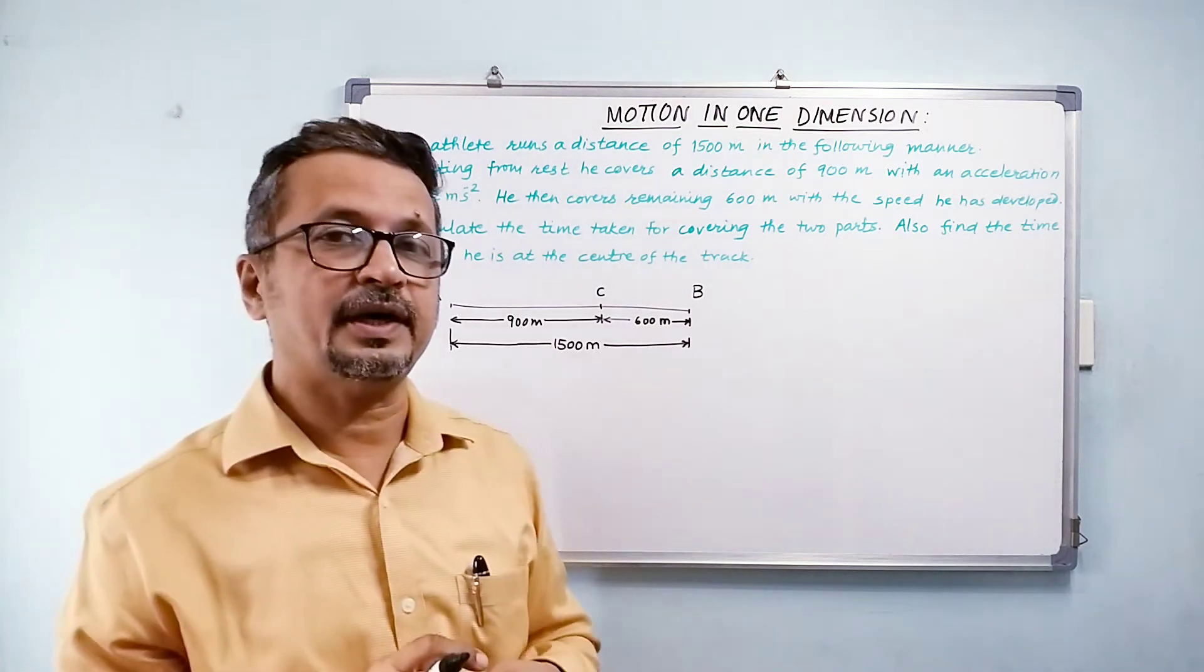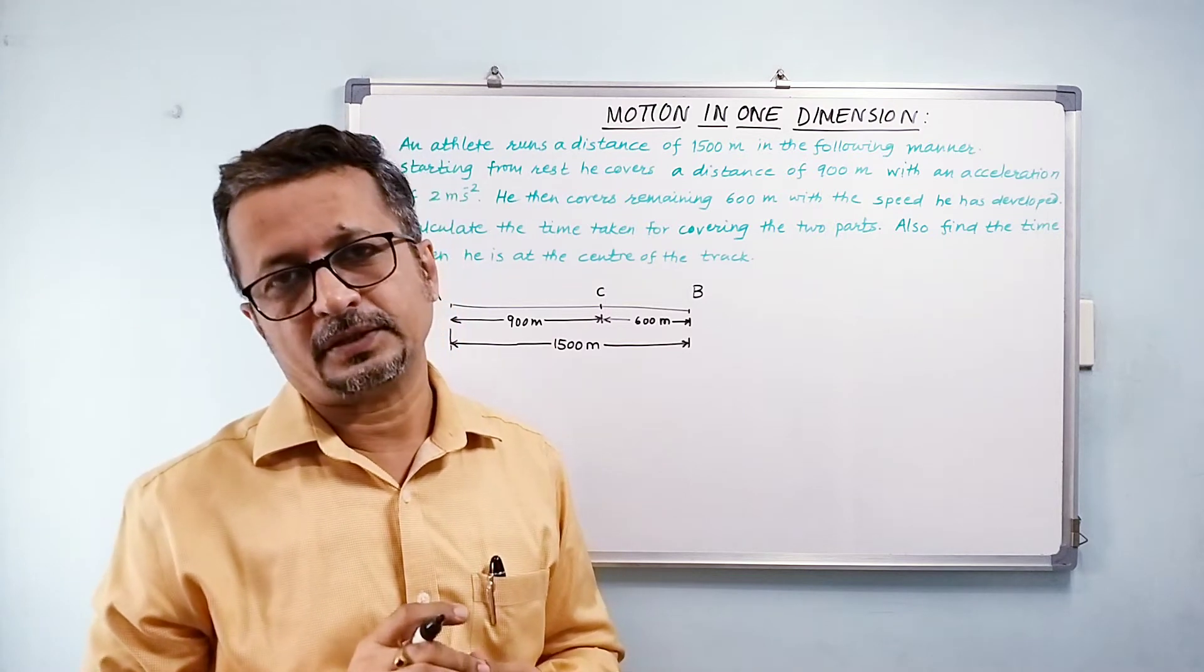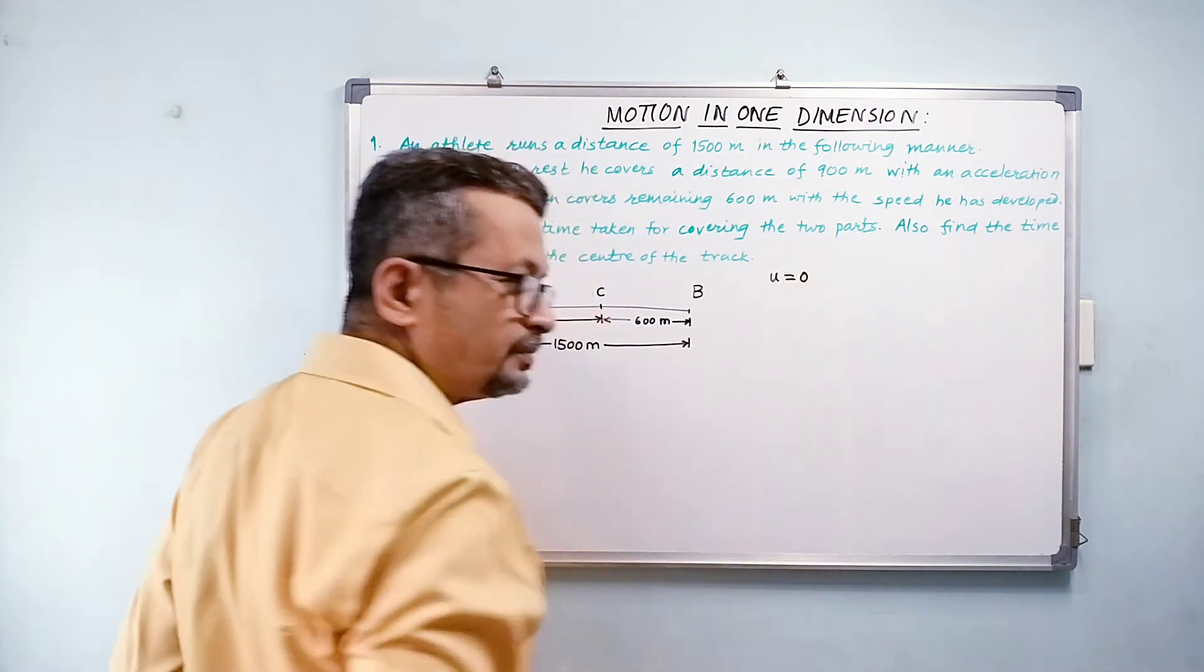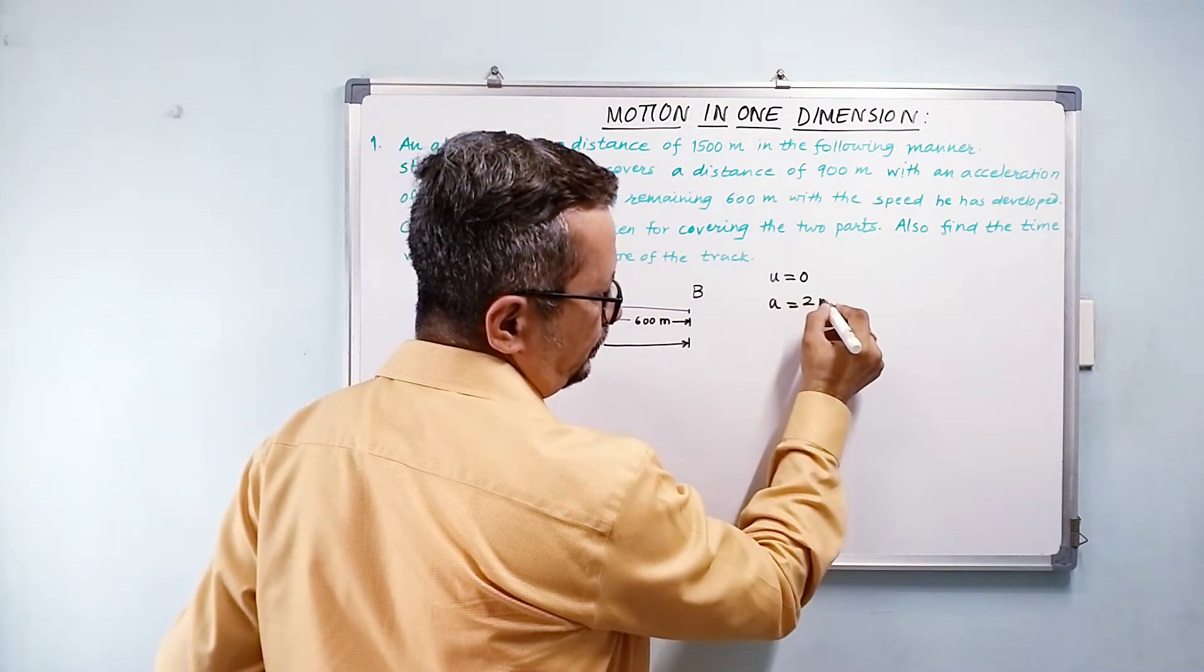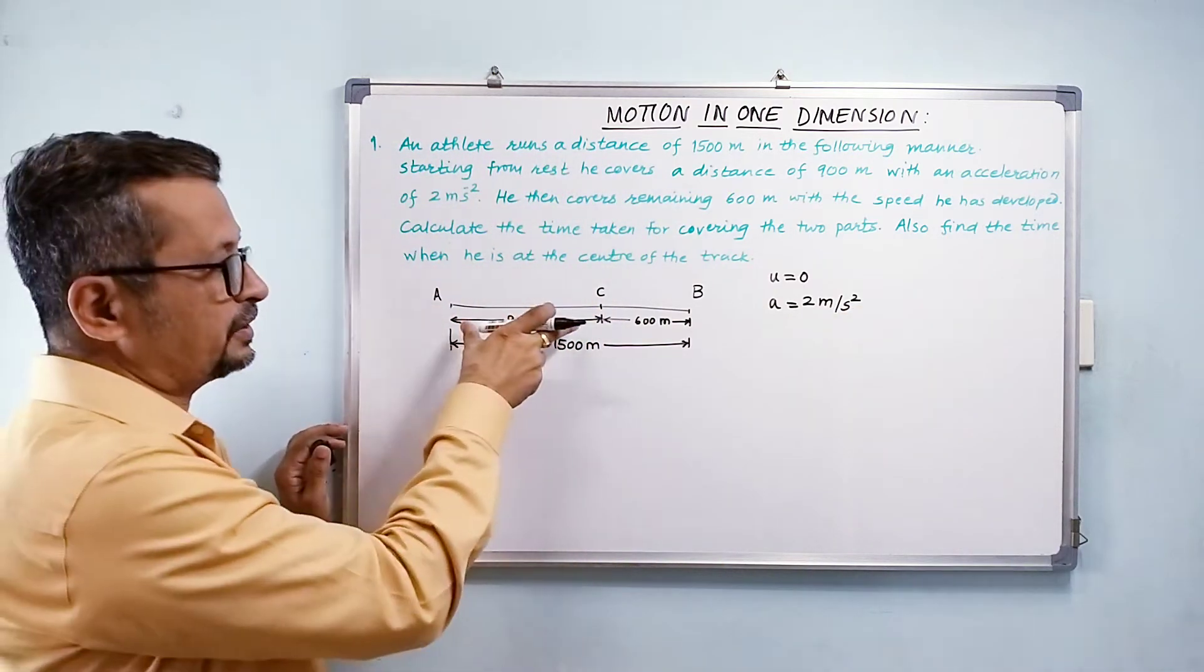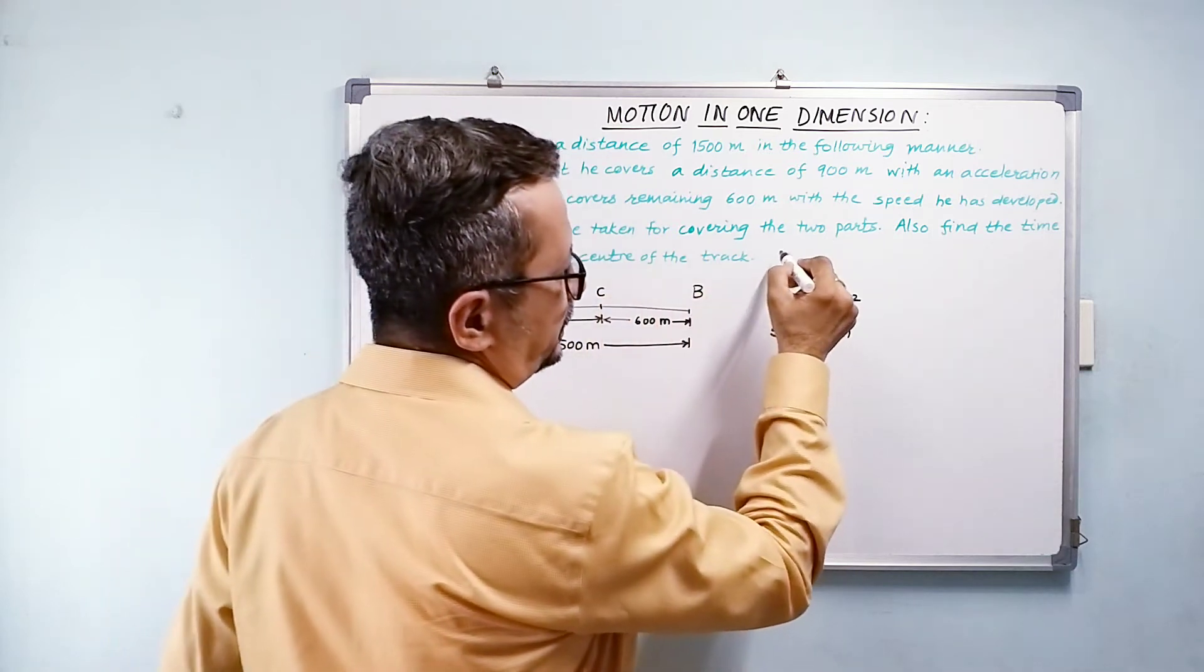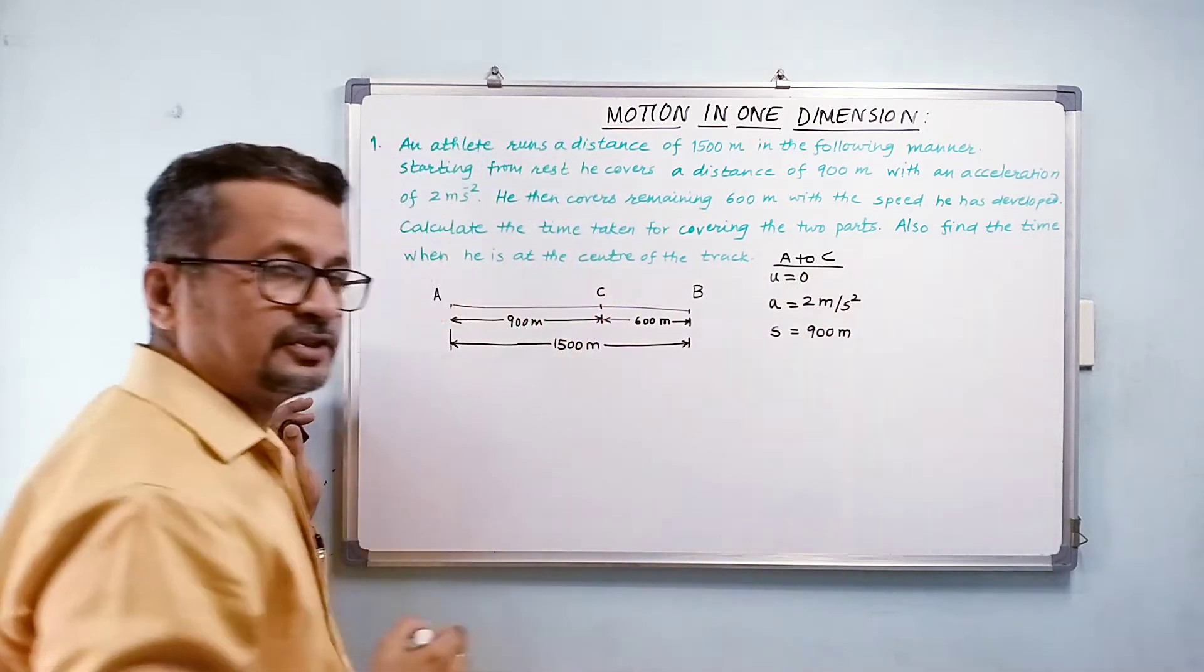And now we need to find the time taken for both the parts. Now here he is starting from rest. So I know that my initial velocity u equals 0. What else do I know? I know that the acceleration is equal to 2 meters per second squared. And the distance covered here, S is 900 meters. And this is for A to C, the first part.